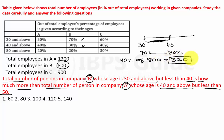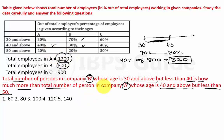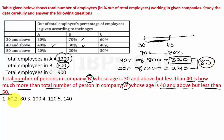Now the same concept is applied to Company A: employees whose age is 40 and above but less than 50. 40 and above in Company A is 40%, and 50 and above is 20%. The difference is 40 minus 20, which is 20%. So 20% of 1200 gives 240. Therefore 320 minus 240 is exactly 80 more. Option number 2 will be the correct answer.